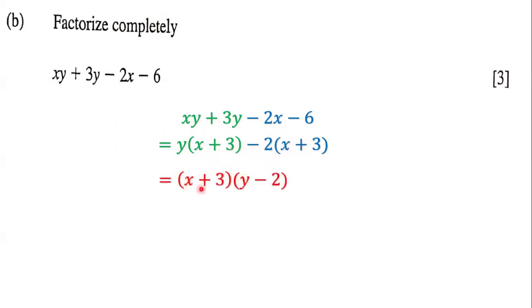So we factor out x + 3, and when we factor out x + 3 we are left with y - 2. That means the final answer is (x + 3) multiplied by (y - 2). That's the complete factorization, and this is our answer.